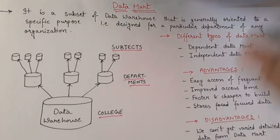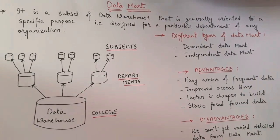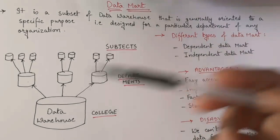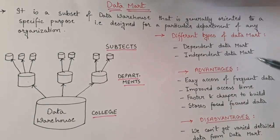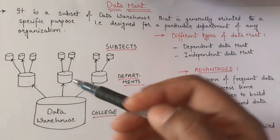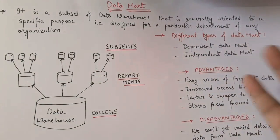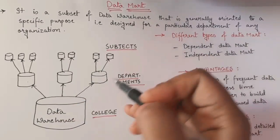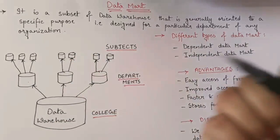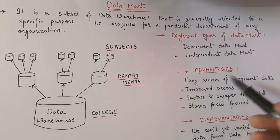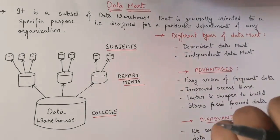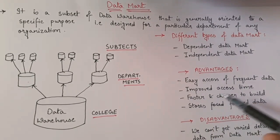Whatever more specific data we are getting is our data mart, and the superset or bulk of data is known as the data warehouse. This is basically the main difference between them. Now let's see the advantages and disadvantages, and at the end we will see the different types of data mart. The first advantage is easy access of frequent data — whenever specific data is needed we can easily access it from the data mart, whereas finding it in the data warehouse would be difficult due to the bulk of data.